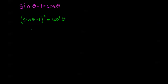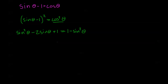Now I have identities I can use. I'll expand the left side: sine squared theta minus 2 sine theta plus 1. On the right side, I apply the Pythagorean identity for cosine squared: 1 minus sine squared theta. Then I move everything to the left side — adding sine squared theta and subtracting 1 from both sides — giving 2 sine squared theta minus 2 sine theta equals 0.